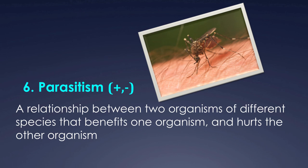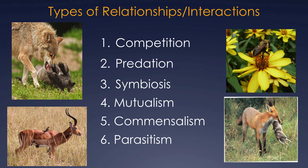As a recap: competition is negative/negative — both individuals are harmed by having to compete. Predation is positive for the predator, negative for the prey. Symbiosis is a long-term relationship between two different organisms, and includes three types: mutualism (positive/positive, benefits both), commensalism (positive/neutral, like barnacles on a whale), and parasitism (positive for the parasite, negative for the host — like mosquitoes on us, or tapeworms).